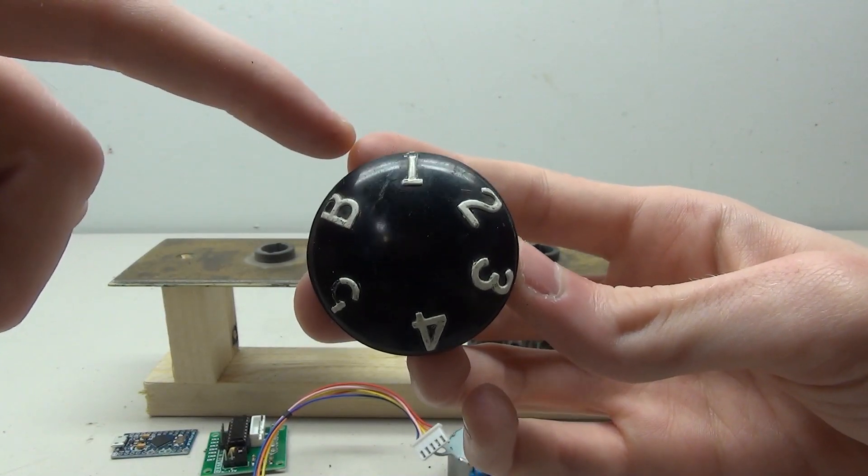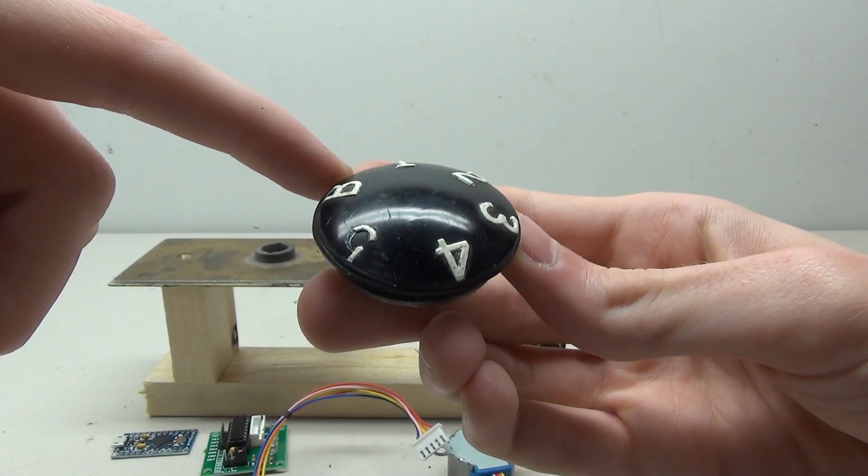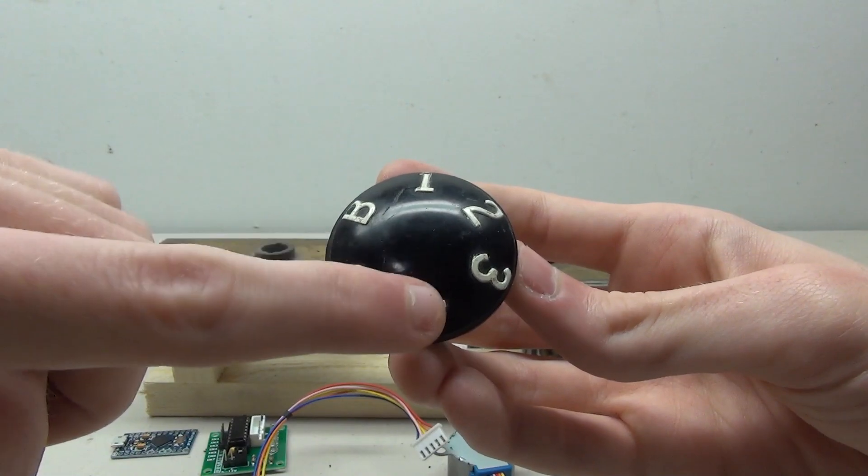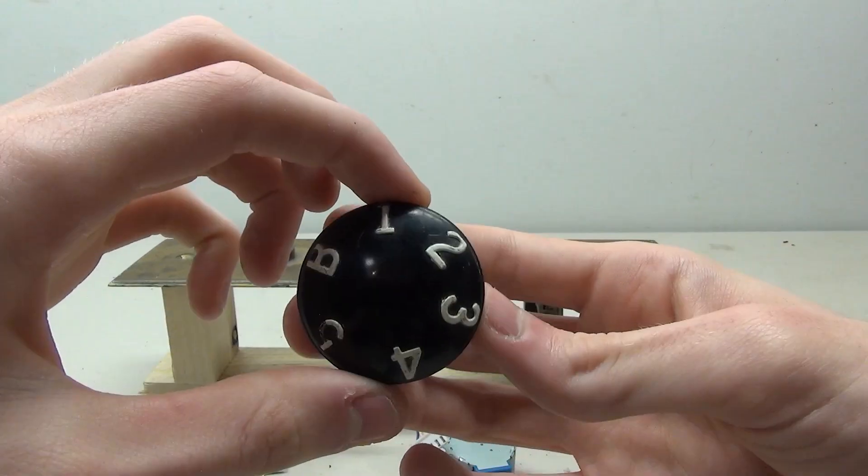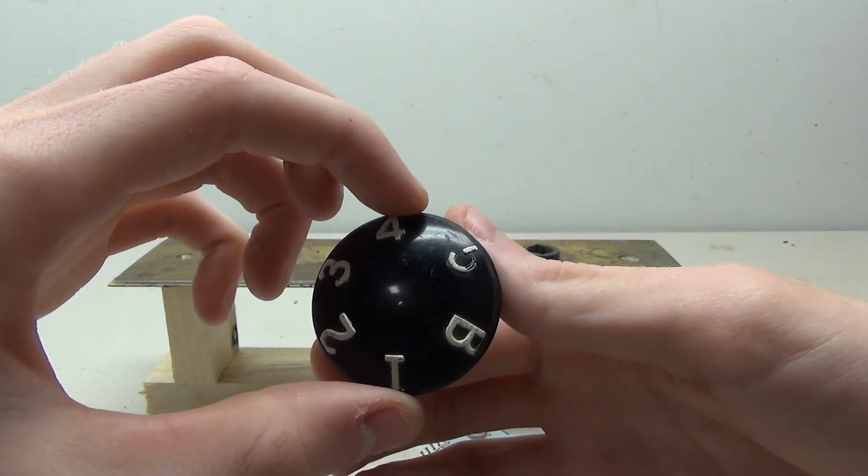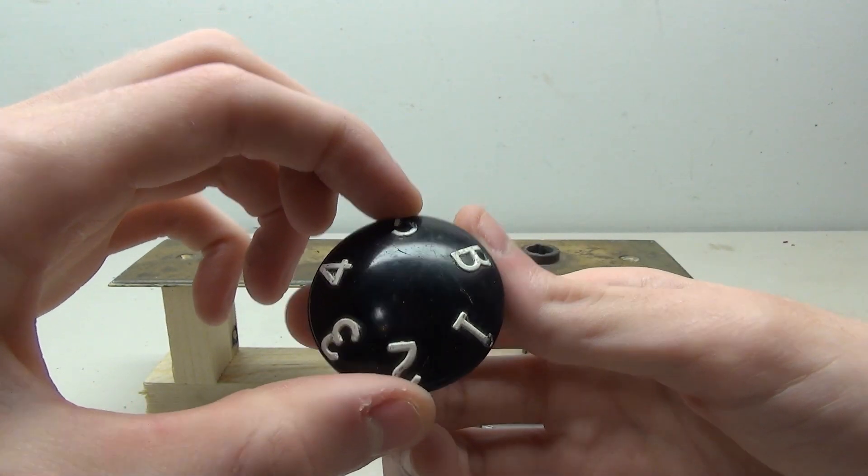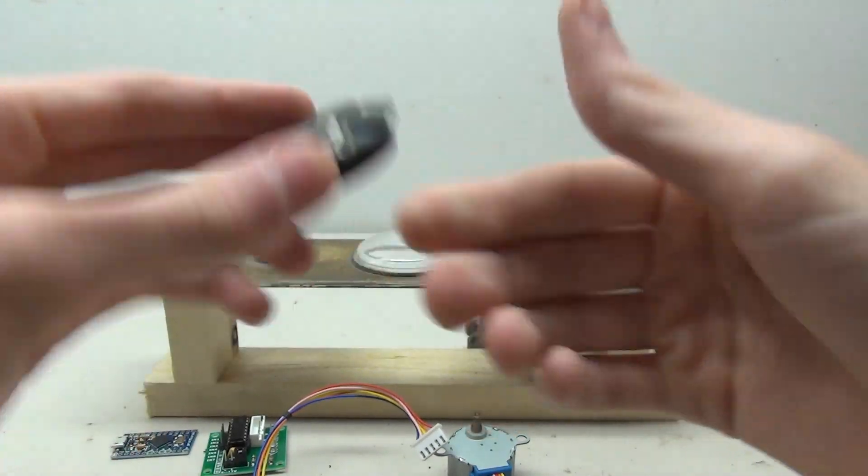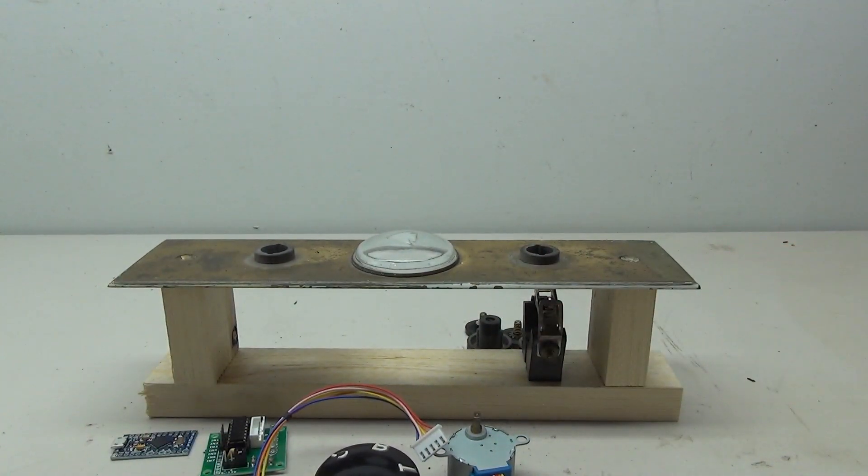So looking at the dial here, it appears that the numbers are for the most part evenly spaced, except for number four. It looks like number four is to the side a little bit. So we'll have to see how that ends up working with the coding. It looks like four might just be a little bit off with the code, but we'll see if I can maybe work something in to fix that.